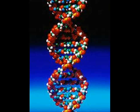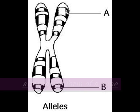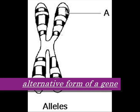DNA is a double-stranded nucleic acid that contains the genetic information for cell growth, division, and function. An allele is an alternative form of a gene.